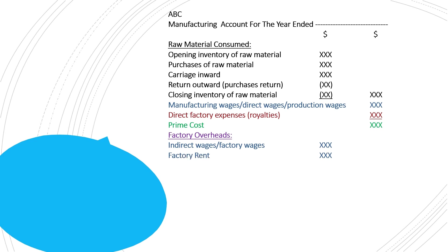Other examples of factory overheads include factory rent, factory insurance, and factory repairs. All expenses that are related to the factory, or that mention the word 'factory,' will be recorded under the heading of factory overheads. All factory-related expenses are included here.